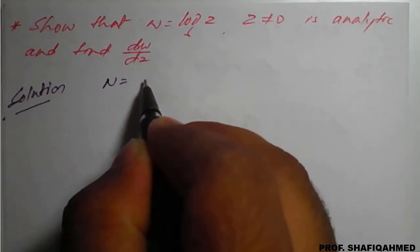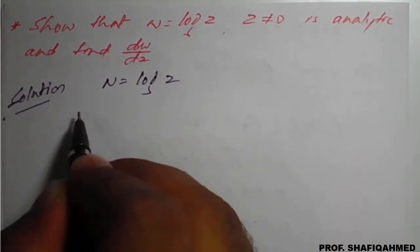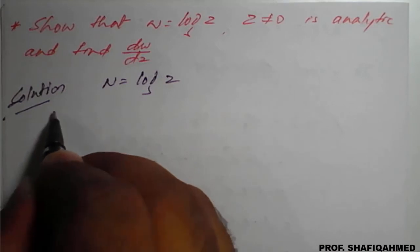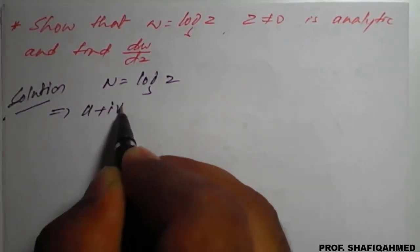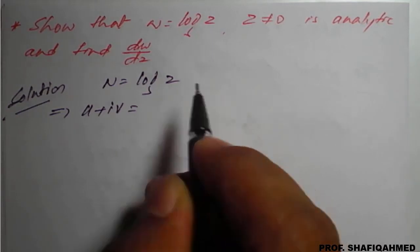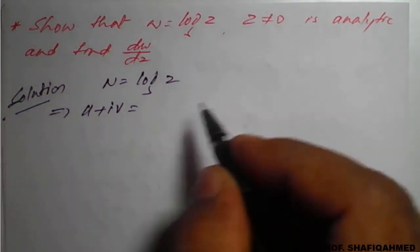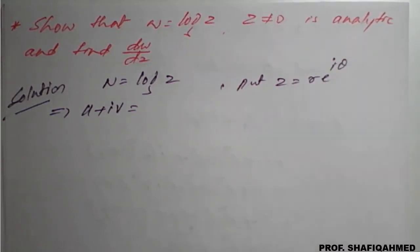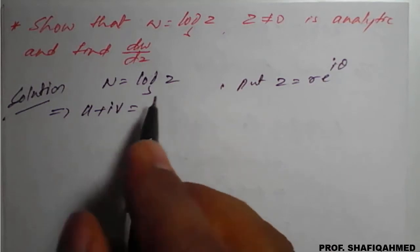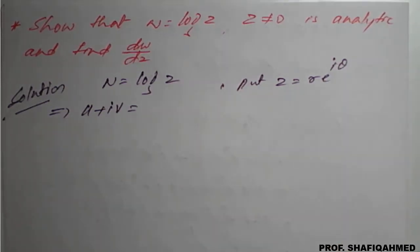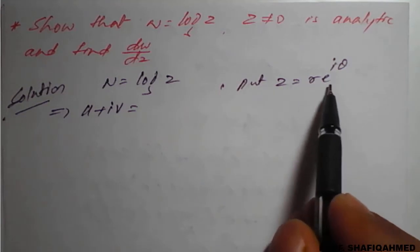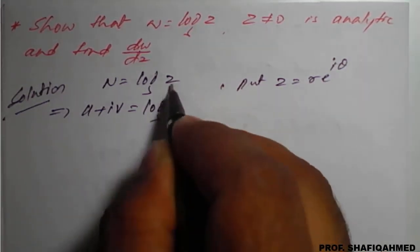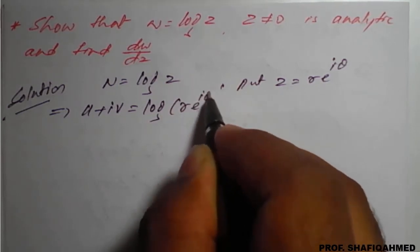So, the given part: w is equal to log of z, which implies w can be written as u plus iv. For log z, we will put z equal to r times e raised to i theta in polar form. This will be easier because we cannot simply expand log of x plus iy directly.